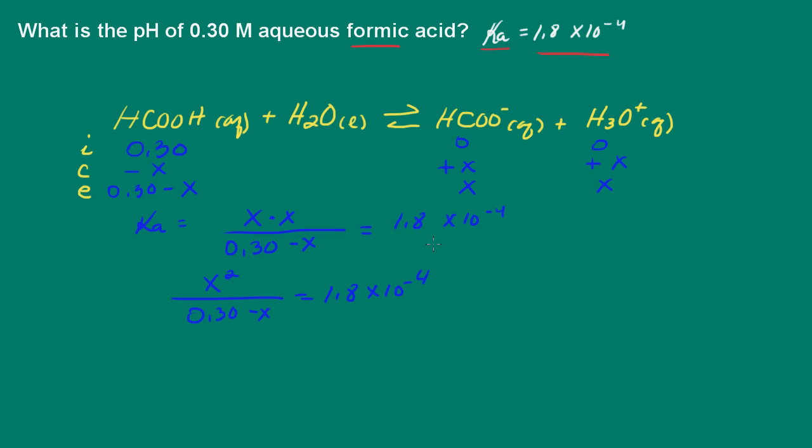Now, what I'm going to do is the acid dissociation constant is 10 to the minus 4. And then I look at my initial concentration of 0.3 molar. I'm going to assume that X is very small compared to 0.3 molar.